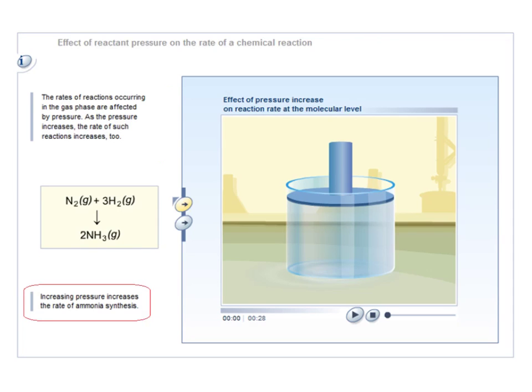So in summary, increasing the pressure of a gas mixture, for example by lowering this piston here, will make the particles more crowded, pushing them closer together. That will increase not only the number of collisions, but also the number of successful collisions—in other words, those with an energy greater than the activation energy.